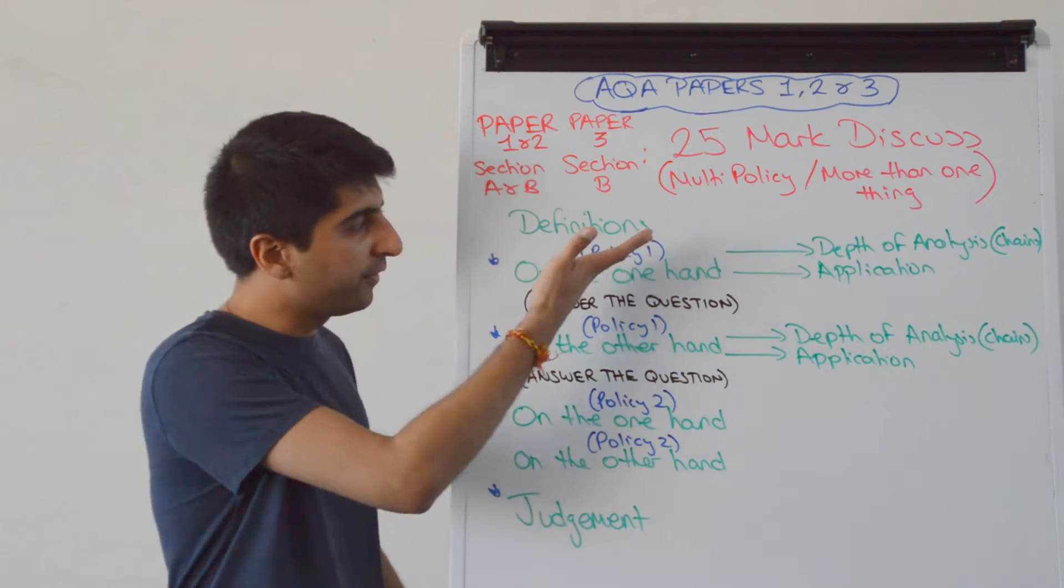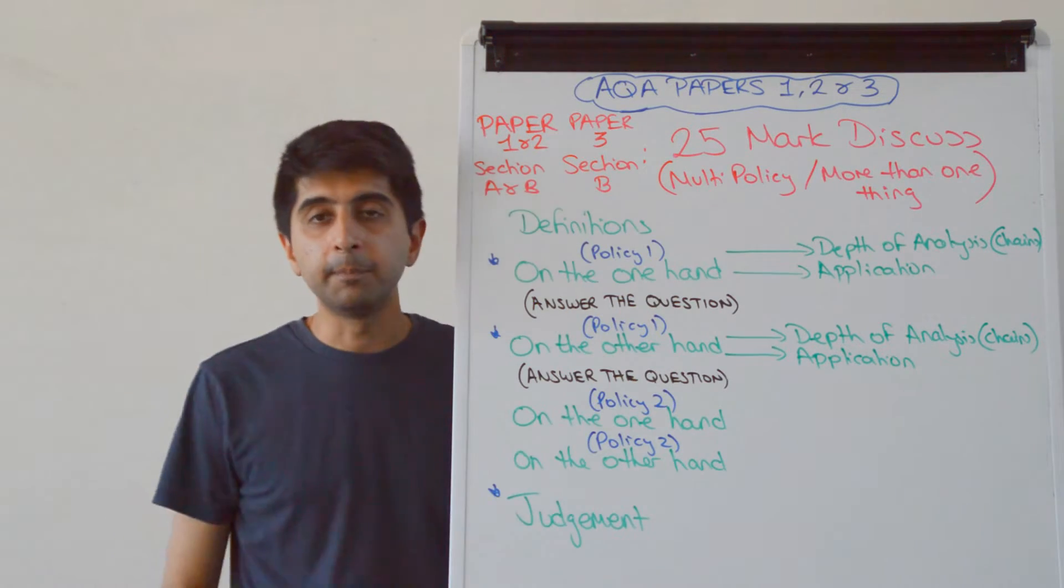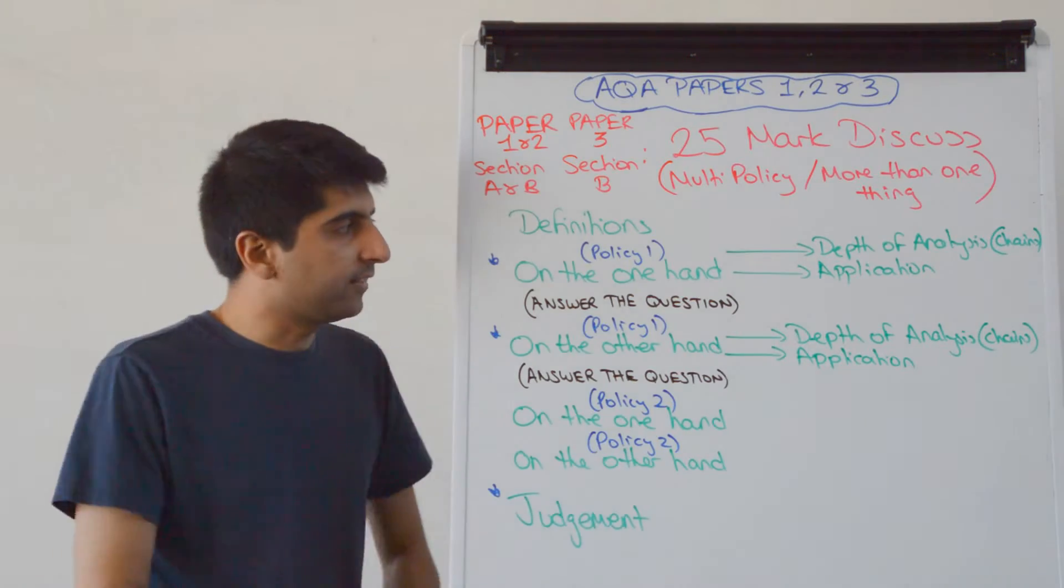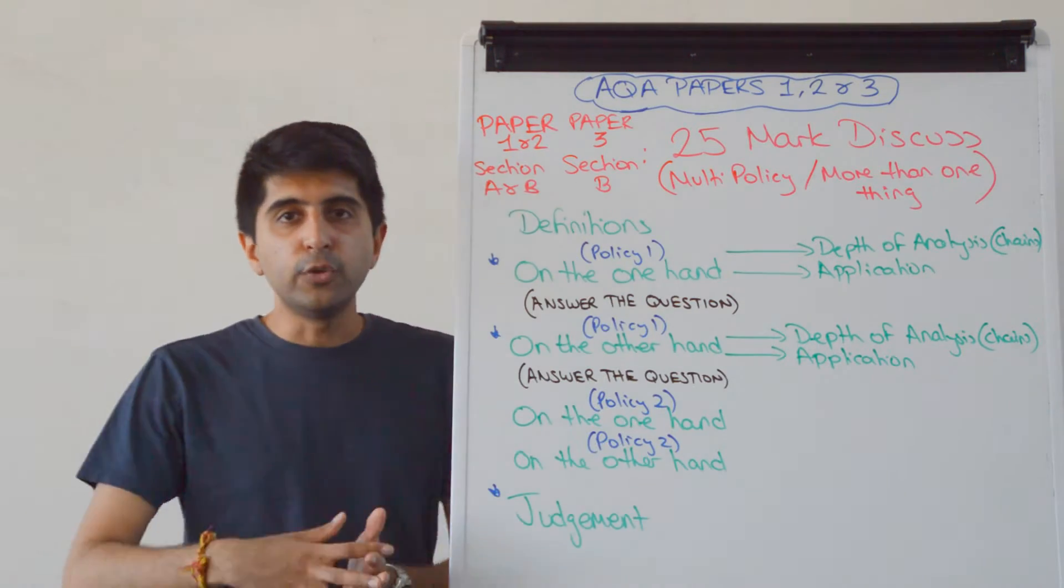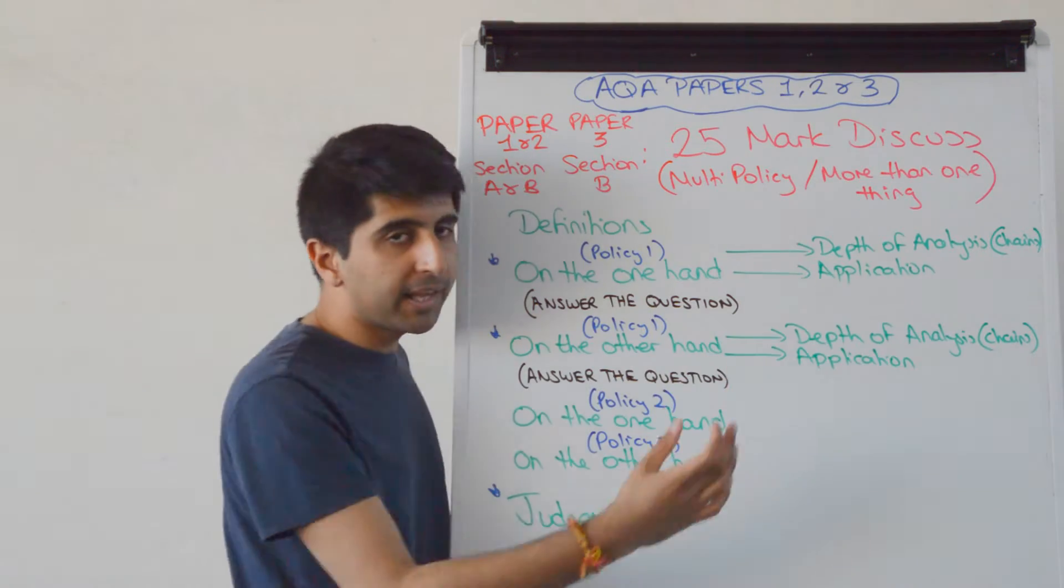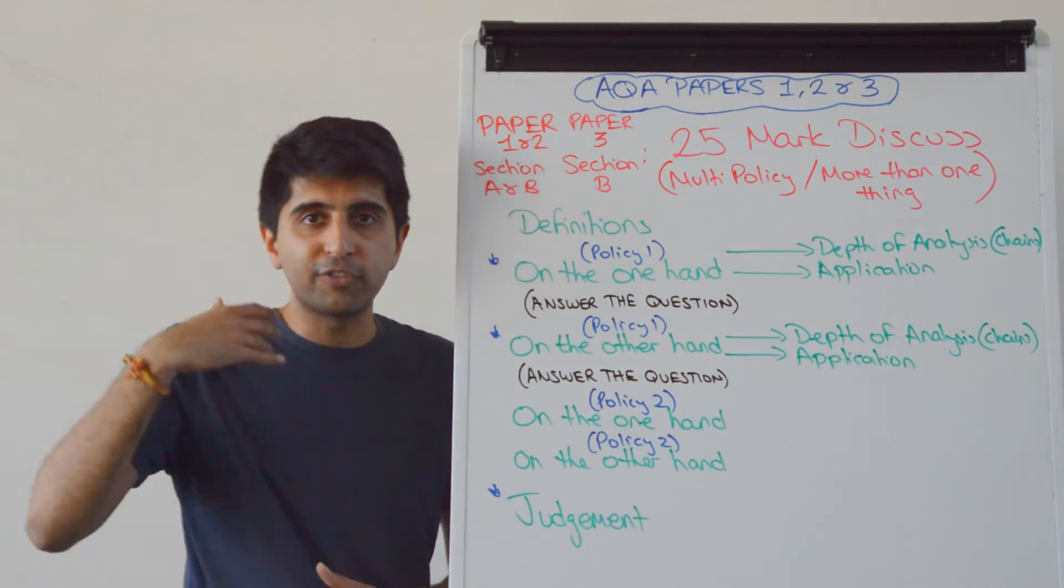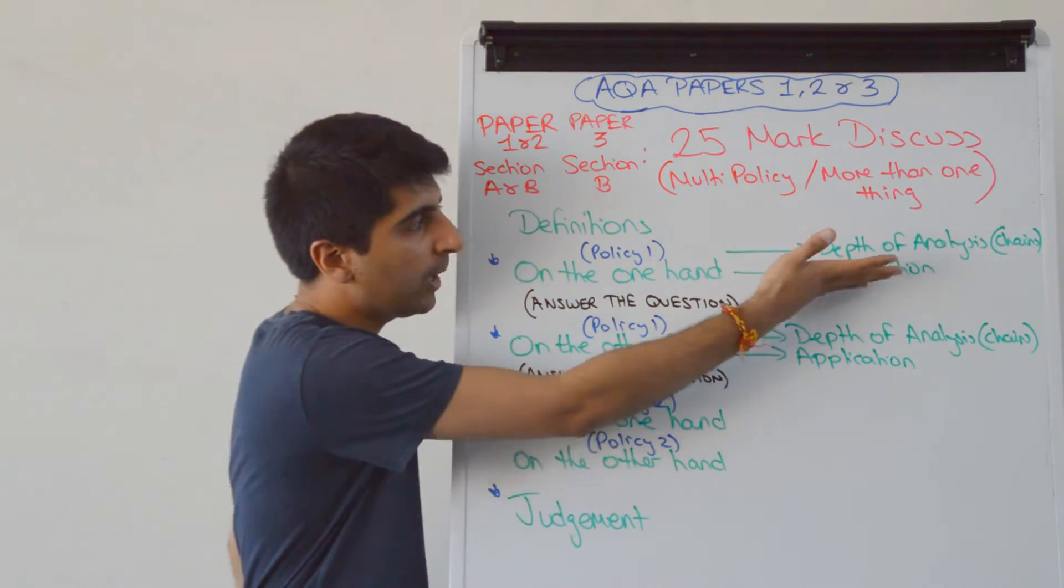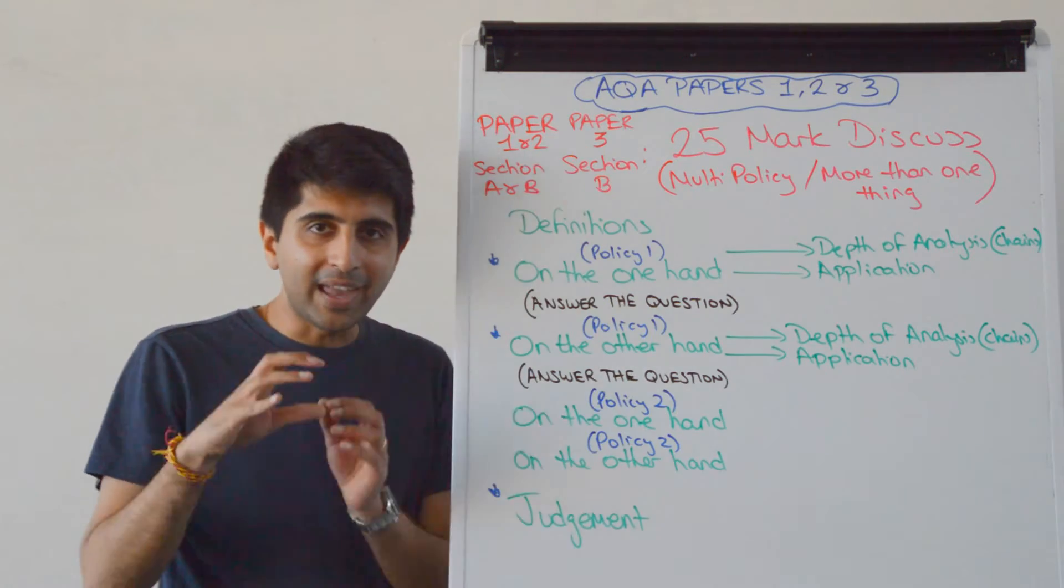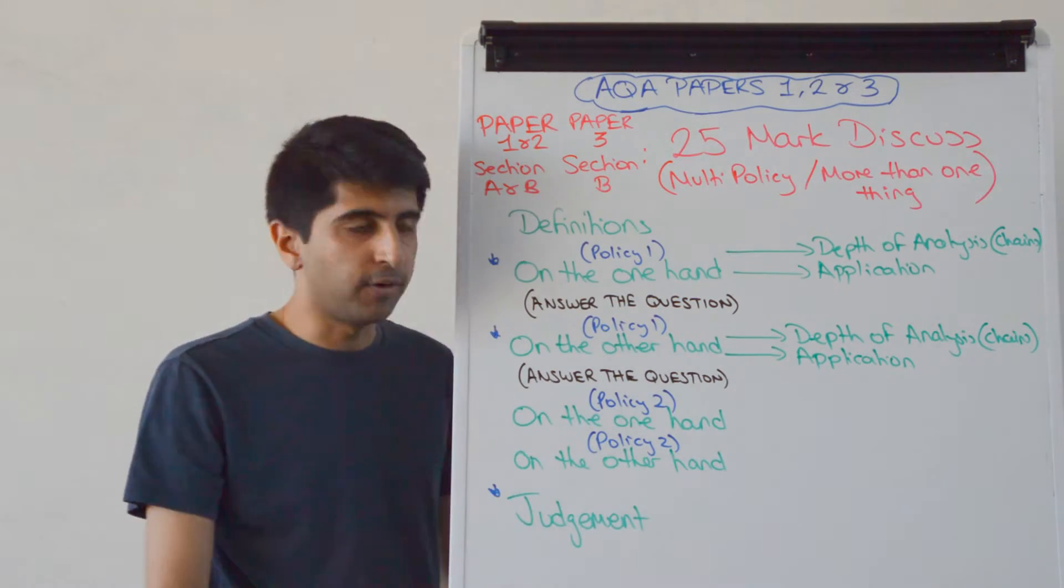Then you just think, the on the one hand, on the other hand structure is absolutely fine. Just go in order. For example, policy 1—let's just stick to a multi-policy question here. Here's one policy that can be used to increase growth. You pick your first policy, you explain it in detail with chains of analysis, you have good application, whether it's from extracts if you have them or from your own knowledge. Good application, depth of analysis—you explain how that policy can do whatever the question is saying in detail, maybe with a diagram as well.